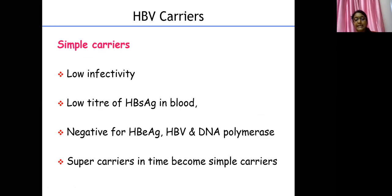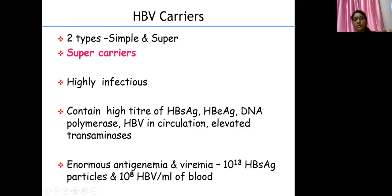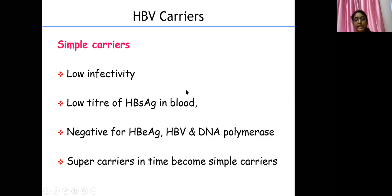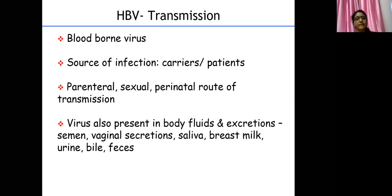An important point: HBeAg is a symbol of infectivity — it means the virus is actively multiplying in the blood. Whenever HBeAg is detectable in a patient's blood, it means the person is highly infectious and has actively replicating virus.